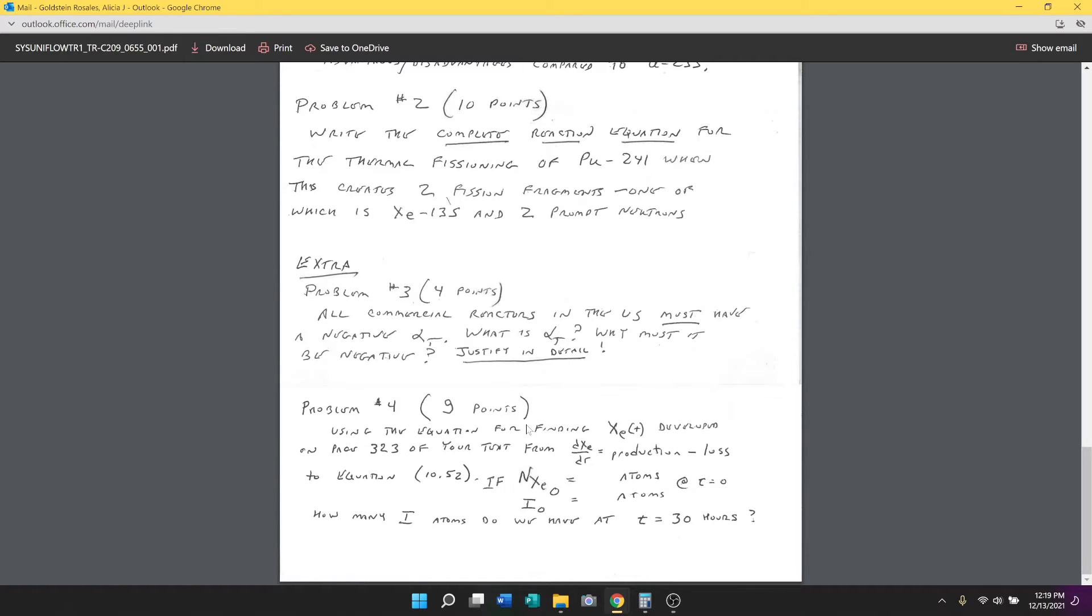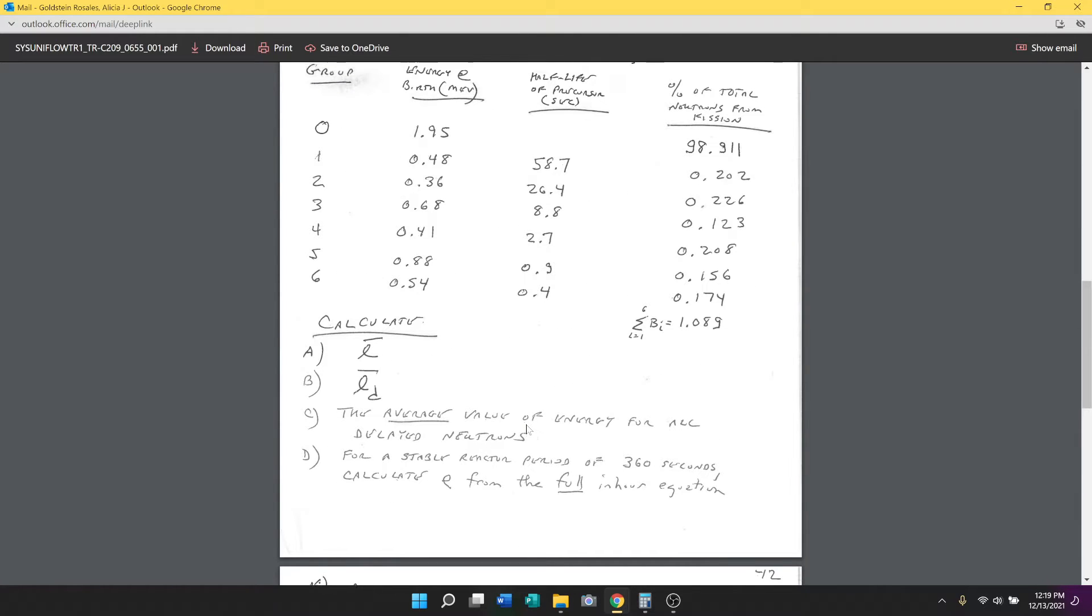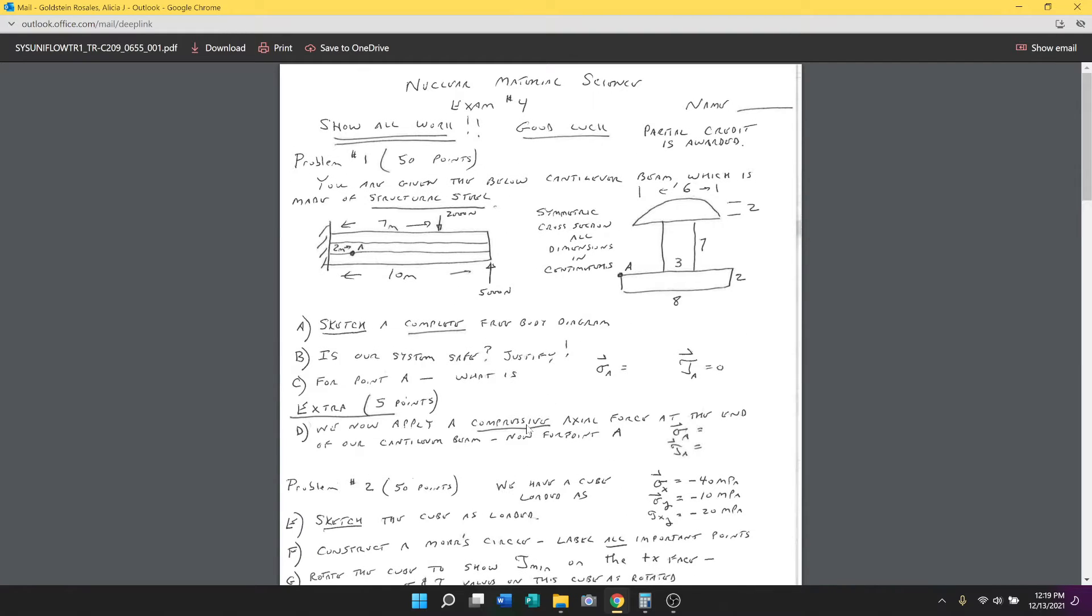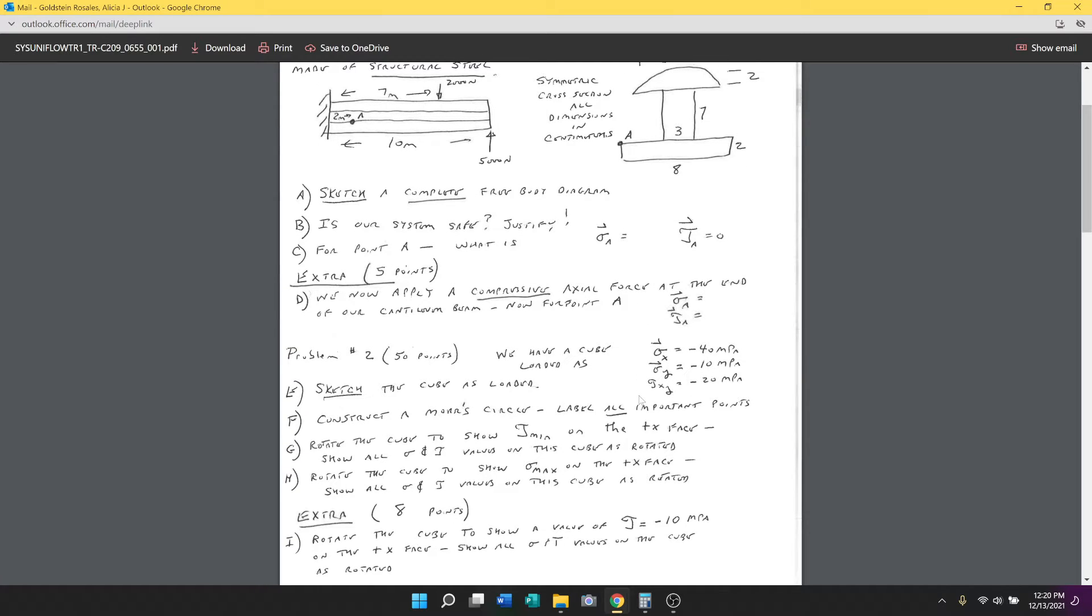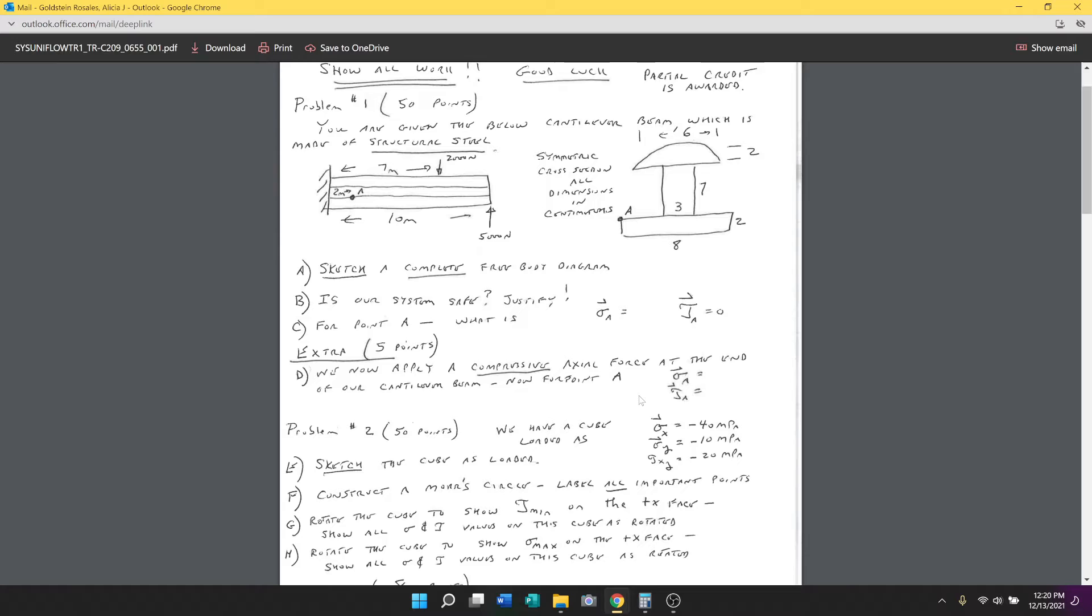Nuclear material science, I've given you a cantilever beam with one up and one down force. I've given you a cross-section, all in centimeters, and it is symmetric. I want you to complete a complete free-body diagram. If it's structural steel, I want to know is the system safe? Justify that. And then for point A, which is two meters from the wall in one view and on the upper left end of the bottom rectangle in the other view, I want to know what is the plane stress and what is the shear stress at that point.